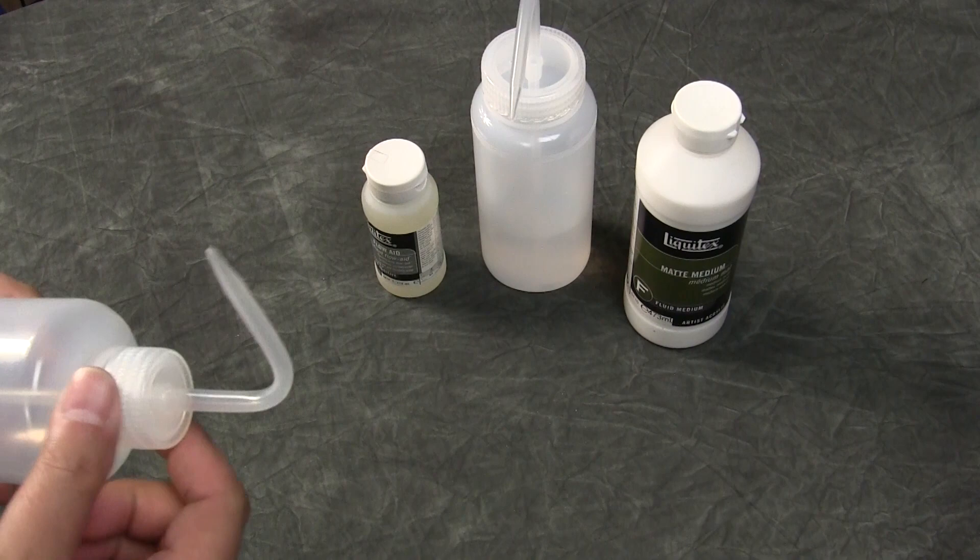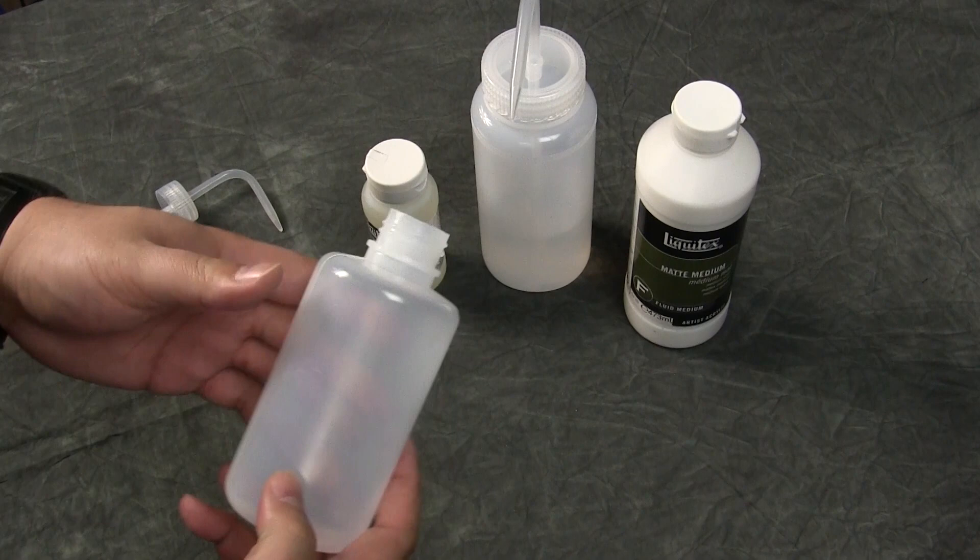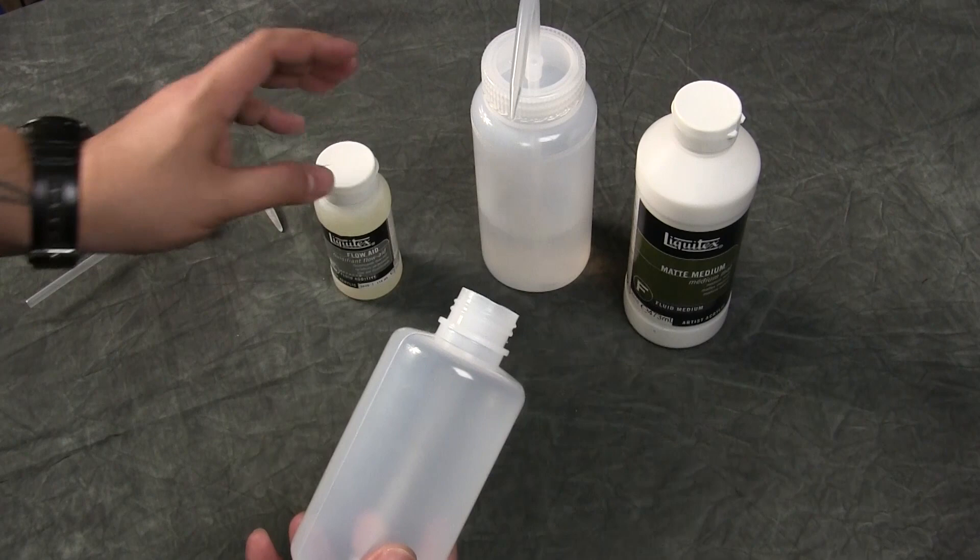All right, so our first step is taking our empty bottle and taking the lid off. Now my recipe, now this isn't the end all be all, is to fill this three quarters of the way with matte medium, and then we're going to put a little bit of flow aid in there and distilled water.